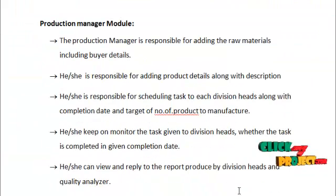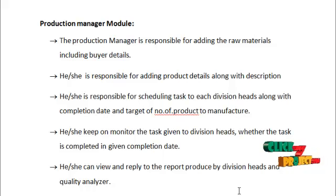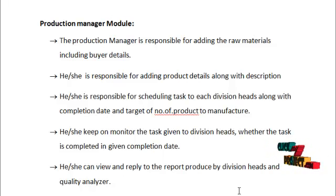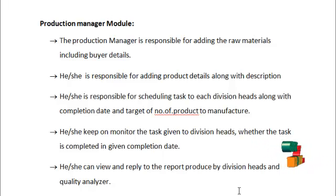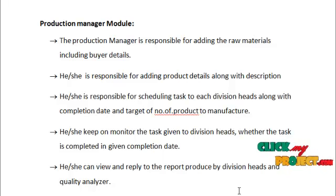The next module would be the production manager module. The production manager is responsible for adding raw materials including buyer details, adding products along with their description, and scheduling tasks to each division head along with the completion date and target number of products to manufacture. The production manager is also responsible for monitoring whether the task is completed by the given completion date, and can view or reply to the division head and the quality analyzer.